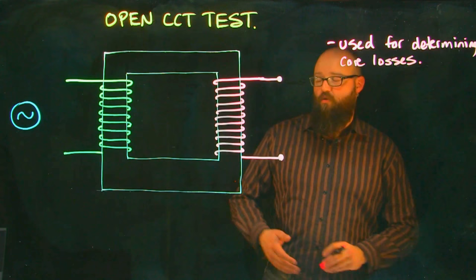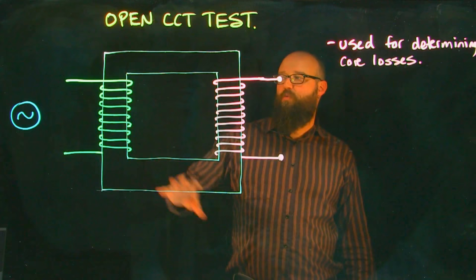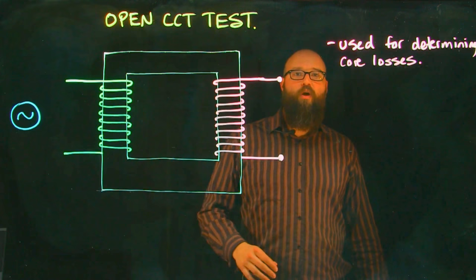What type of losses are we going to have in an open circuit test? Well, as soon as that magnetic field is established by our exciting current, when we connect this to a voltage supply with no secondary load, the only type of current we're going to see is exciting current.